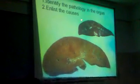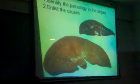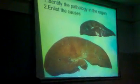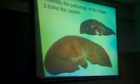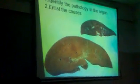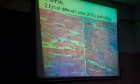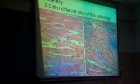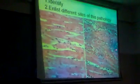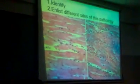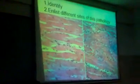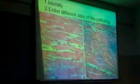This is the normal liver, and here you see a yellowish liver — gross appearance of a fatty change liver. This is myocardial infarction, ischemic necrosis of the myocardium.